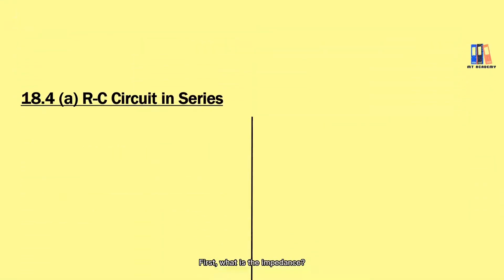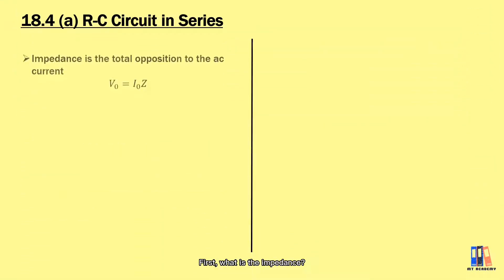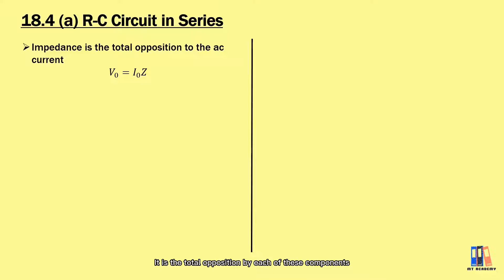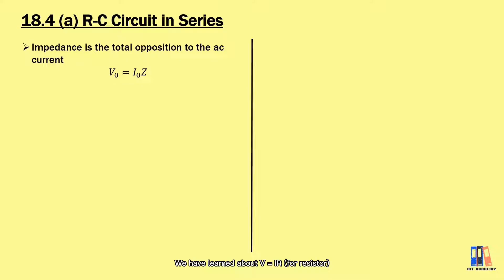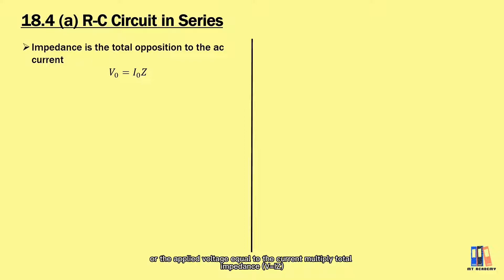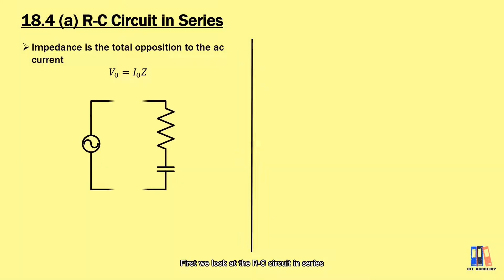So first, what is impedance? It is the total opposition by each of these components to the AC current. We have learned about V = IR or V = IX before, and as for the impedance, it will be the total voltage or the applied voltage V equal to the current multiplied by Z.